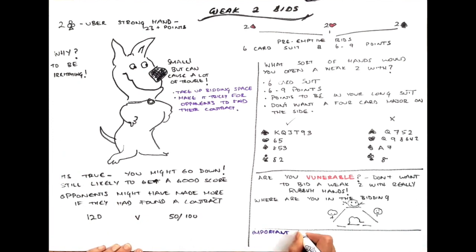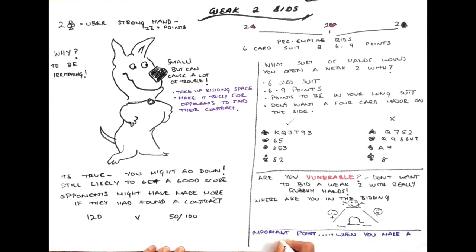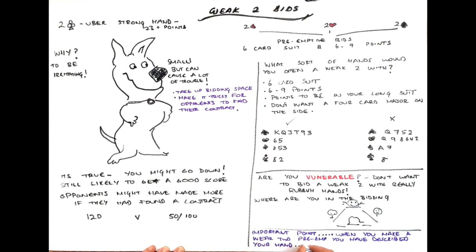An important point. When you make a weak two preempt, you've actually described your hand very well to your partner. So you don't need to take matters into your own hand and come in and bid again.